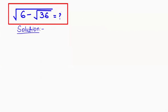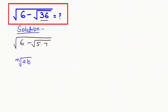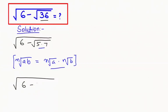In the first step, I'm going to split this 36. Root of 6 minus root of 5 times 7, which gives us 36. Next, I'm going to apply the radical rule that is n-root of a times b can be written as n-root of a times n-root of b. So I'm going to write root of 6 minus root of 5 times root of 7.